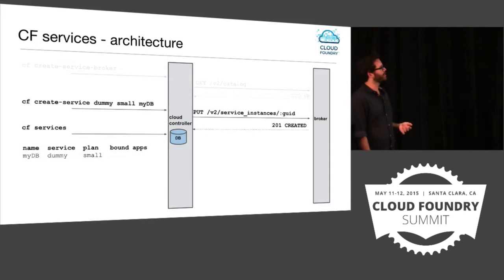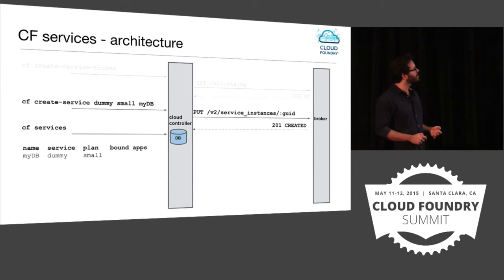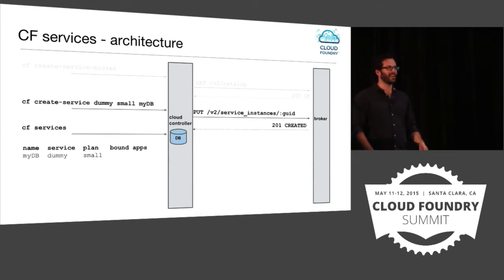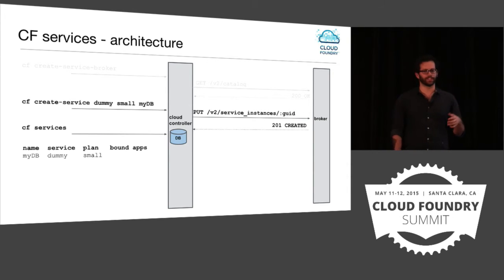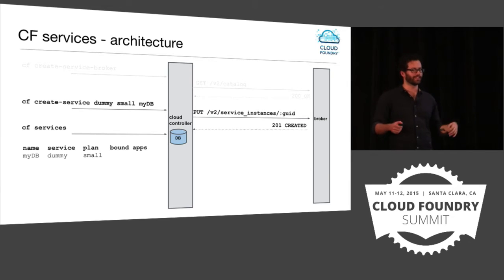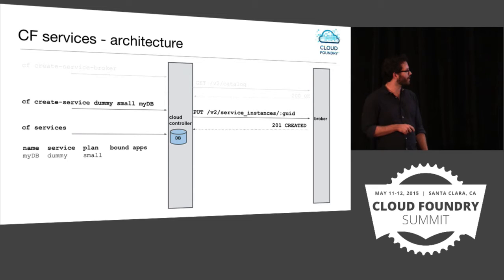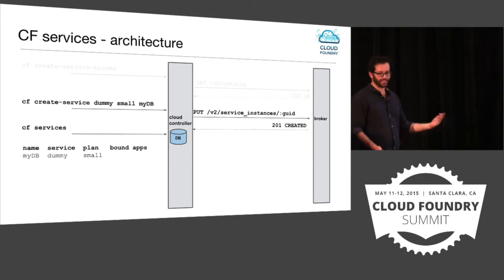Once a developer wants to create a service, they run 'CF create service' via the CLI. The Cloud Controller makes a PUT request to the broker with a GUID, and the broker does whatever it needs to do to make the service — in the MySQL example, that means creating a database. The broker translates the Cloud Foundry-specific request into a service-specific request. Once everything succeeds, the broker returns a 201 Created, the Cloud Controller records the service in the database, and the user can see their new service instance in the output.